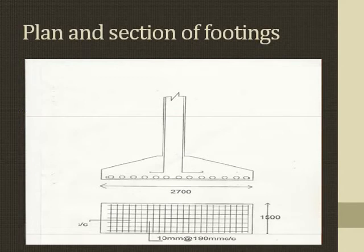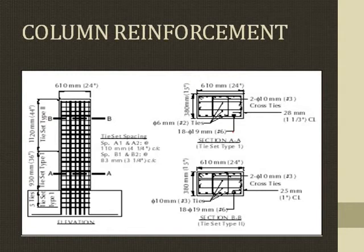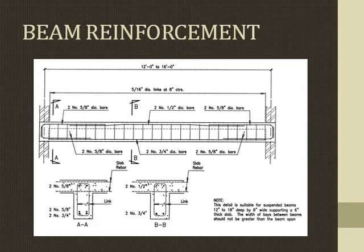Plan and section of the footing shows the reinforcement detailing. The size of rods used is 10 mm diameter with spacing of 190 mm centre to centre. Column reinforcement shows various lateral reinforcements used, depicted for both elevation and section views — Section A and Section B. Beam reinforcement detail is suitable for suspended beams of 12 to 18 inches deep by 18 inches wide, supporting a 6-inch thick slab. The width of the base beam should not be greater than the beam span.